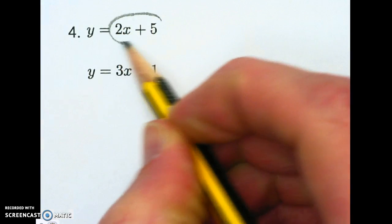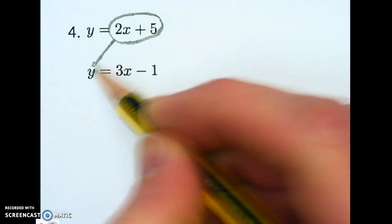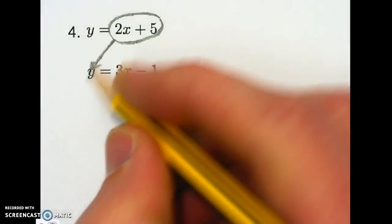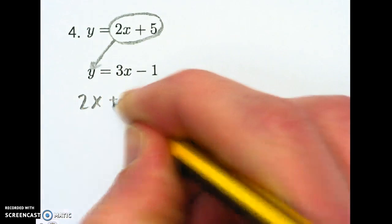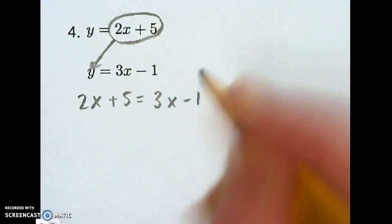I'm going to be taking this top piece, which is equal to y, and plugging it in to y in the other equation. So here I go rewriting it. I'll have 2x plus 5 equals 3x minus 1.